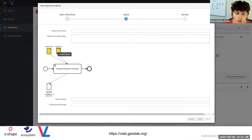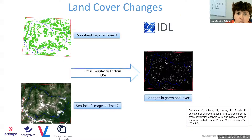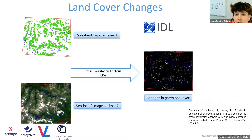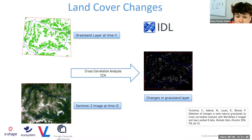One workflow implemented during E-SHAPE is for land cover change identification using cross-correlation analysis. It starts from a land cover target layer at time T1 — for example, the grassland layer for the Gran Paradiso National Park site — which is compared to a Sentinel-2 image acquired at time T2. The output is a map of changes in the target land cover class.